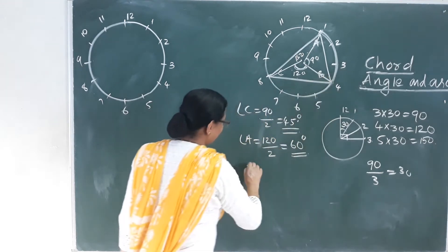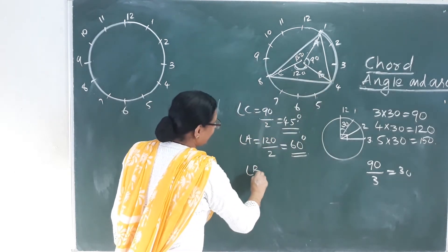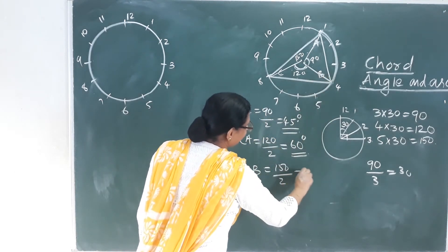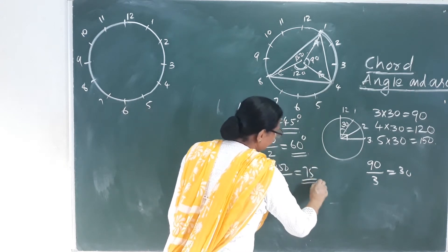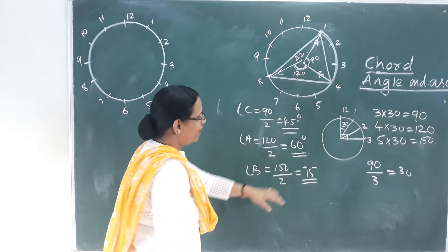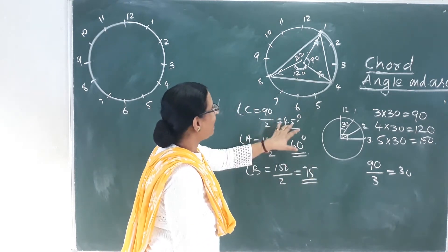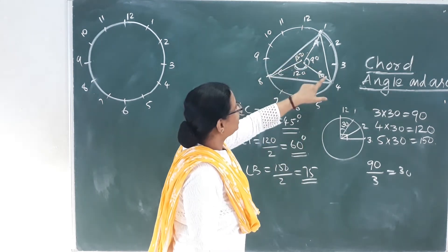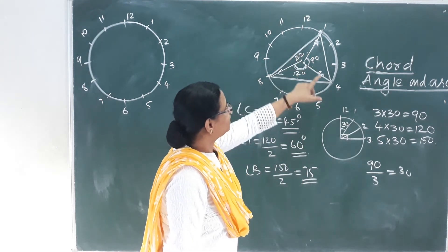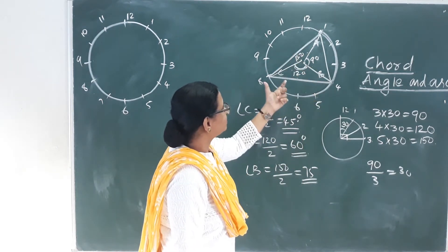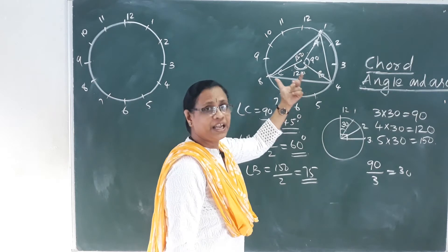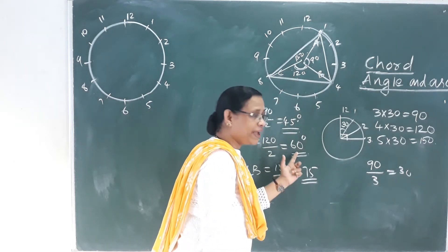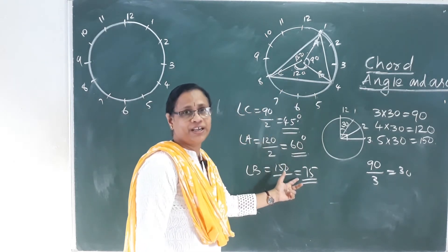Angle B is equal to 150 divided by 2, which equals 75 degrees. The angles sum to 180 degrees. So in this clock triangle joining 1, 4, and 8, the angles are 45, 60, and 75 degrees.